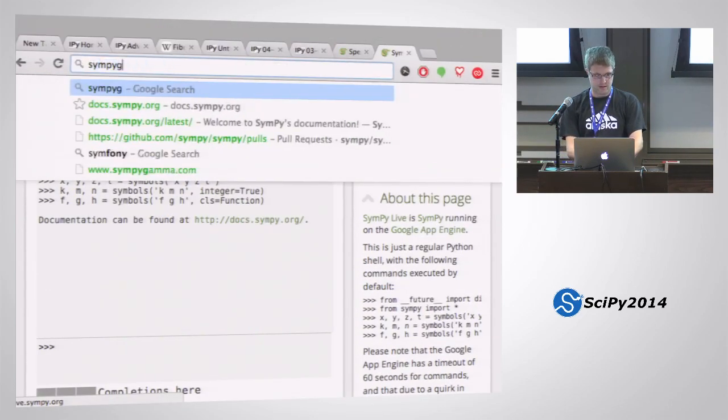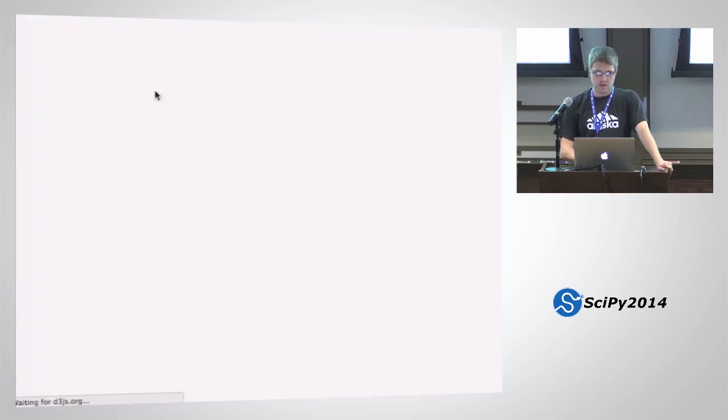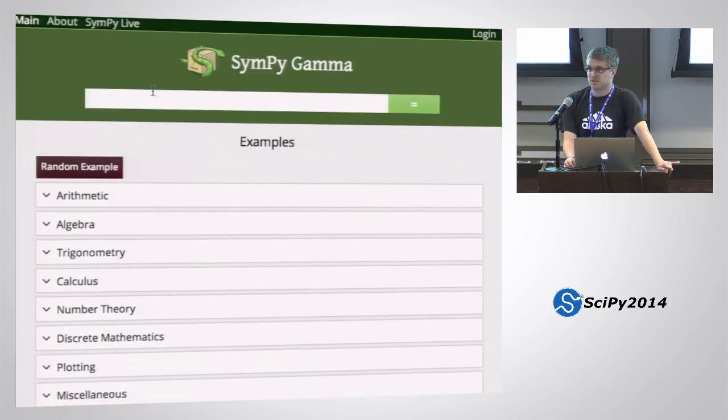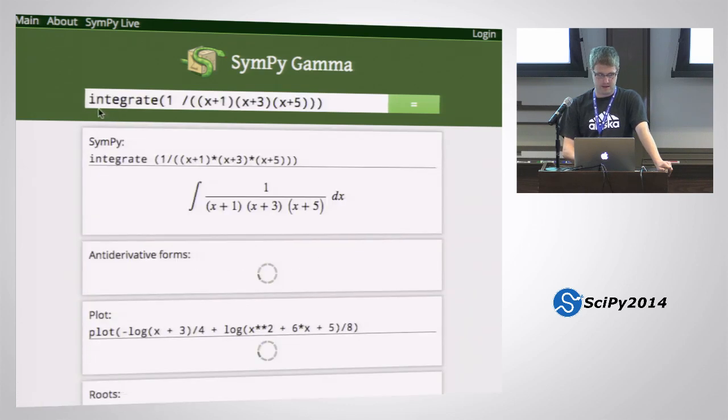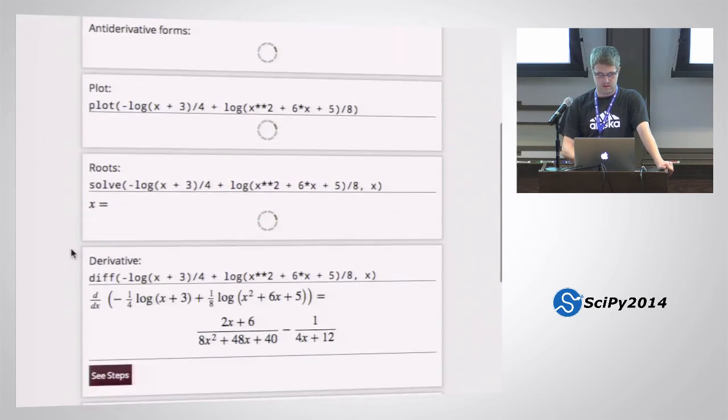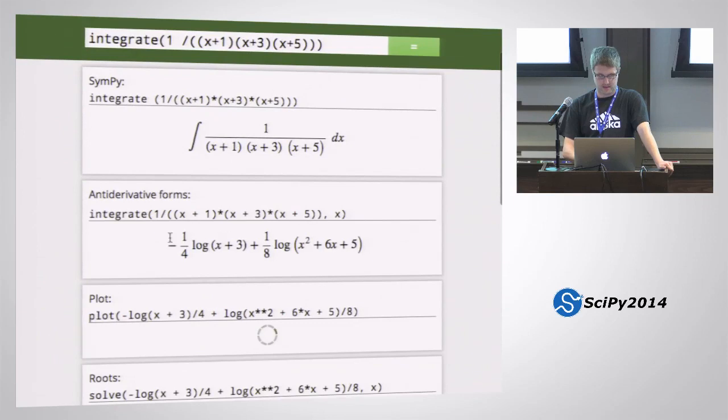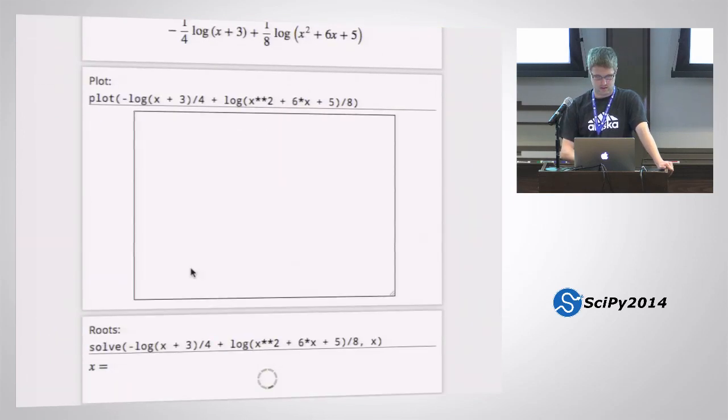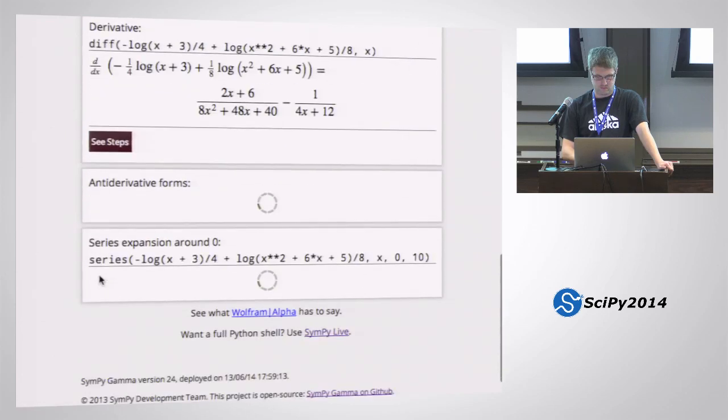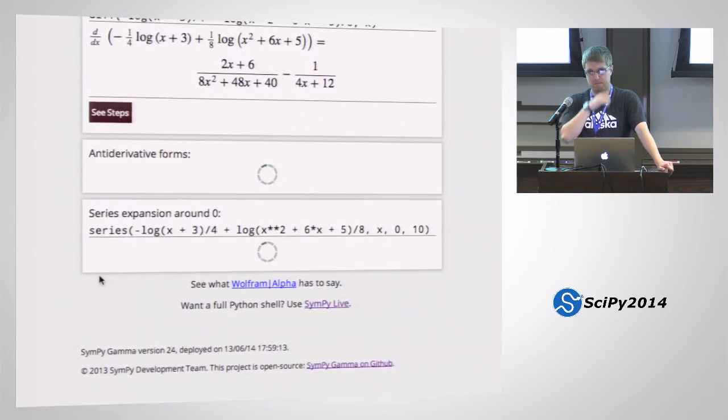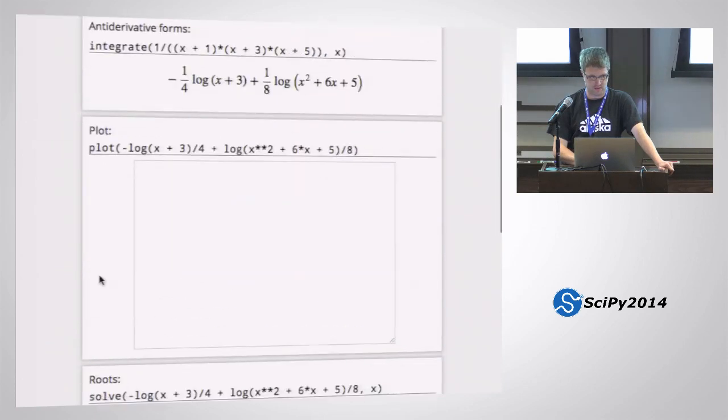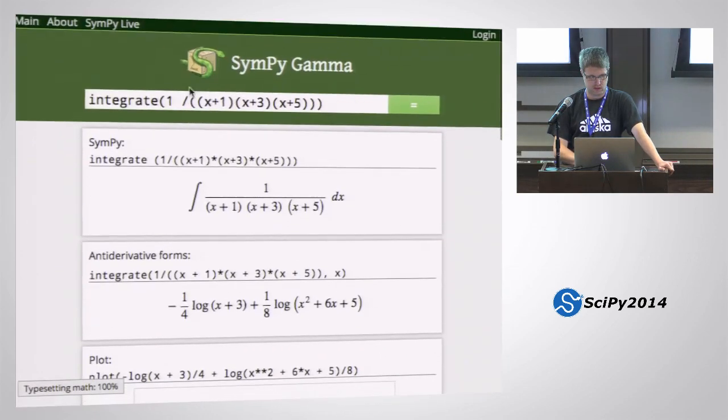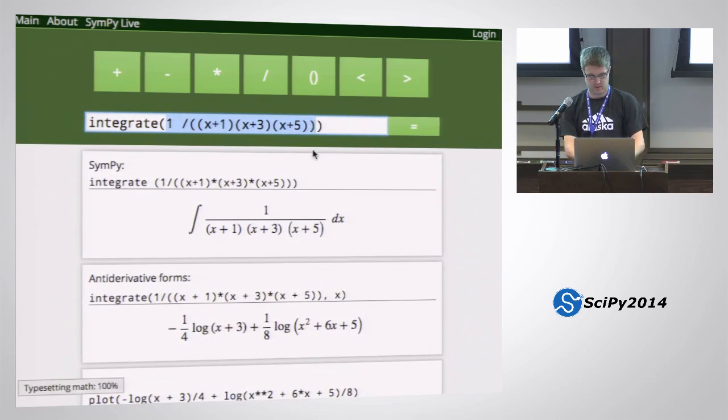And if you go to sympygamma.com, this is SymPy's version of Wolfram Alpha. Here's a random example. You just type, you can type in some function here, and it'll compute like this interval here.